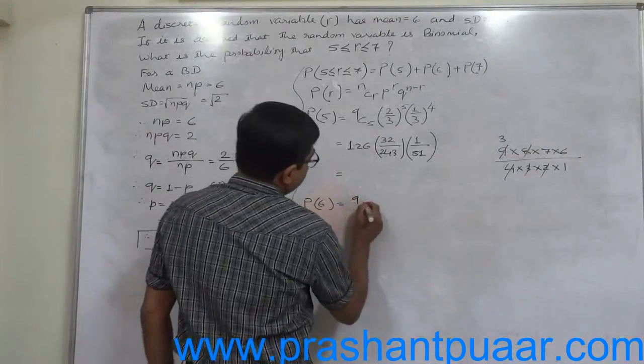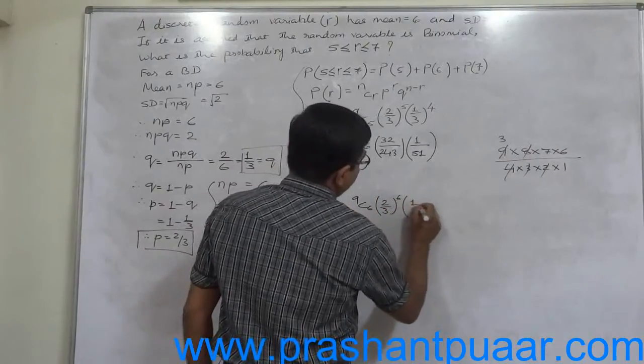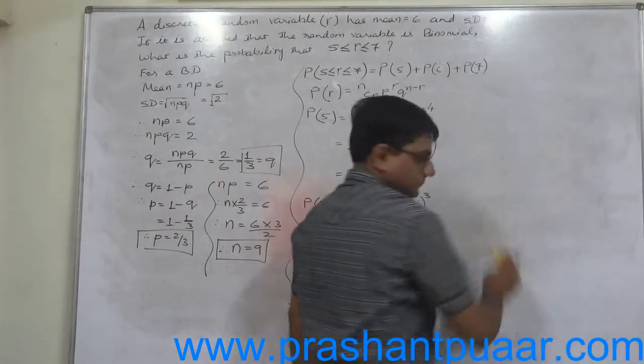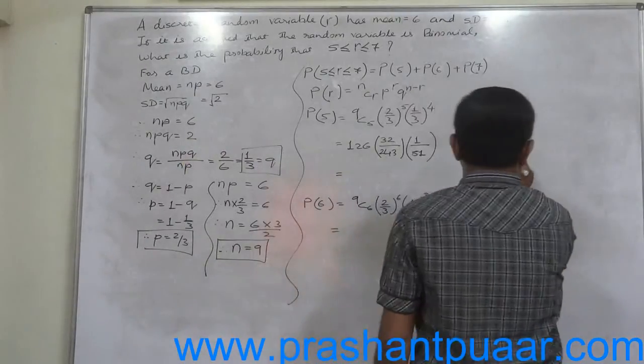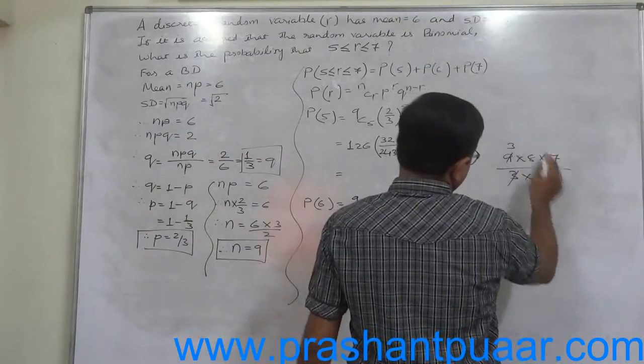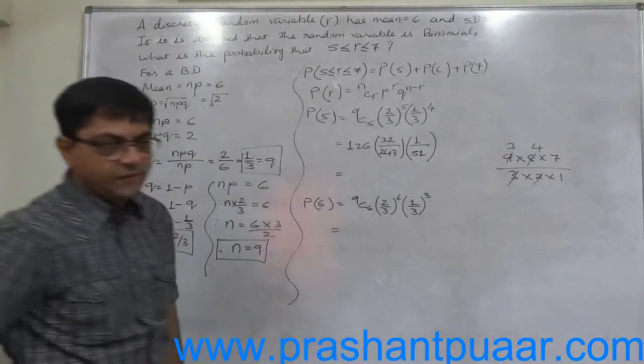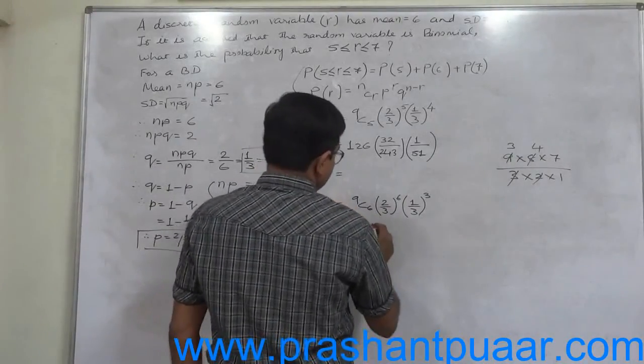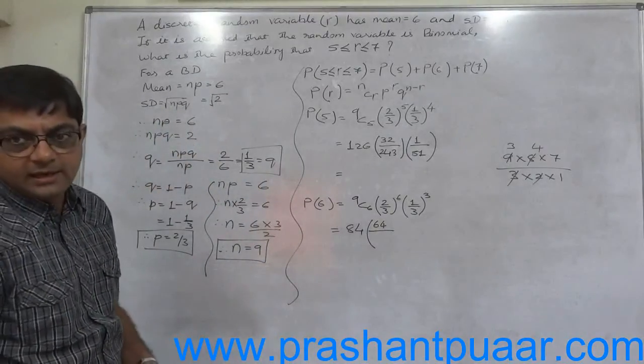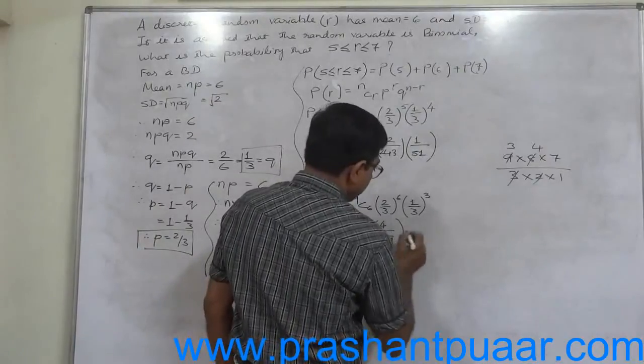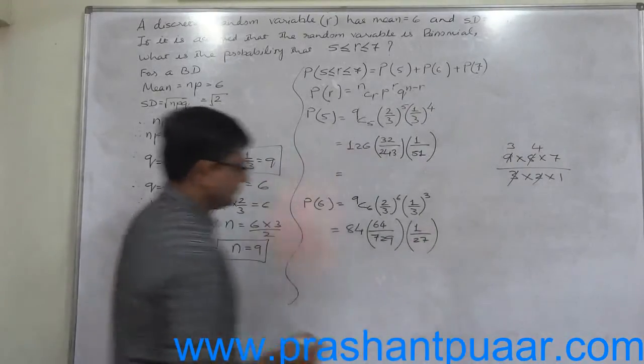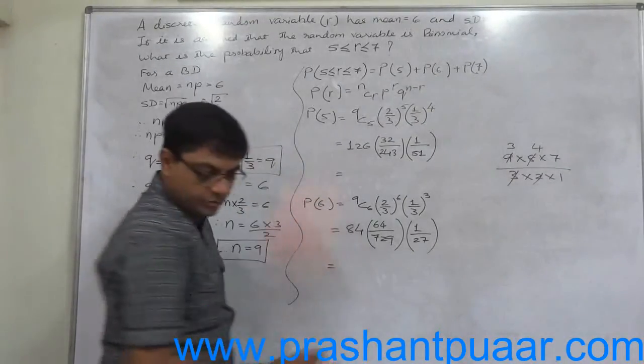Probability of 6 successes: it is 9C6 times (2/3)^6 times (1/3)^3. 9C6 is 9×8×7 divided by 3 factorial, 3×2×1. 3 cancelled against 9, 2 cancelled against 8, giving 84. 84 times 2^6 is 64, and 3^6 is 243×3 which is 729. (1/3)^3 is 27. You can obtain the same denominator in all three cases.